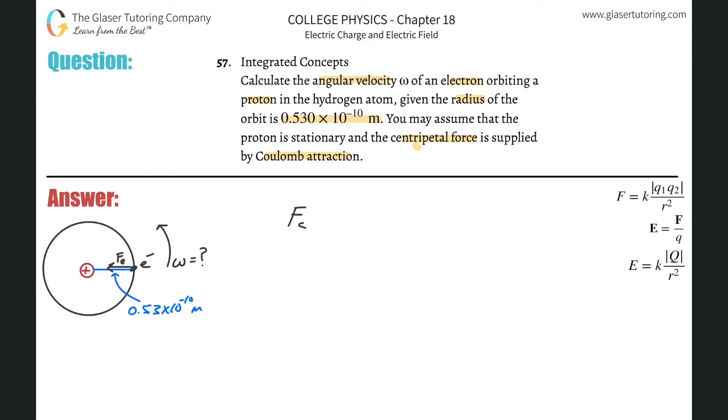So we know that the centripetal force F sub C must equal MA, MAC. This is literally just based off of F is equal to MA. This FC is just a centripetal force. It's still a force. And this AC is a centripetal acceleration. It's still an acceleration. All this means is a force pointing towards the center of an object making a circle. And this acceleration means an acceleration pointing towards the center.